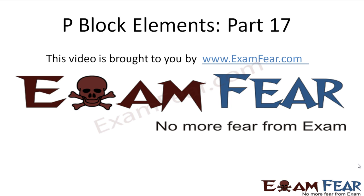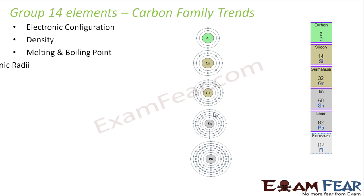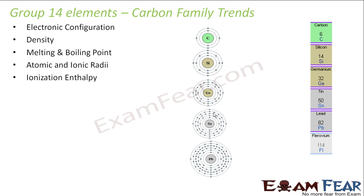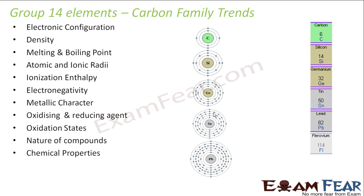Hello friends, this video on P-Block Elements part 17 is brought to you by examta.com. Let's discuss the trends in the carbon family. We'll discuss electronic configuration, density, melting and boiling point, atomic and ionic radii, ionizing enthalpy, electronegativity, metallic character, oxidizing and reducing agent trends, oxidation states, nature of compounds, and chemical problems — similar to what we have done for group 13 elements, we'll do for group 14 elements now.